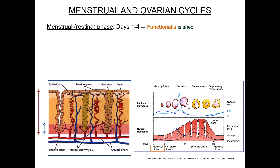The menstrual or resting phase is from roughly days one through four. During this phase, the menstrual discharge appears, consisting of blood from the ruptured spiral arteries and the sloughed off functional layer. After this phase, the endometrium will consist only of the basal layer with the bases of the glands.